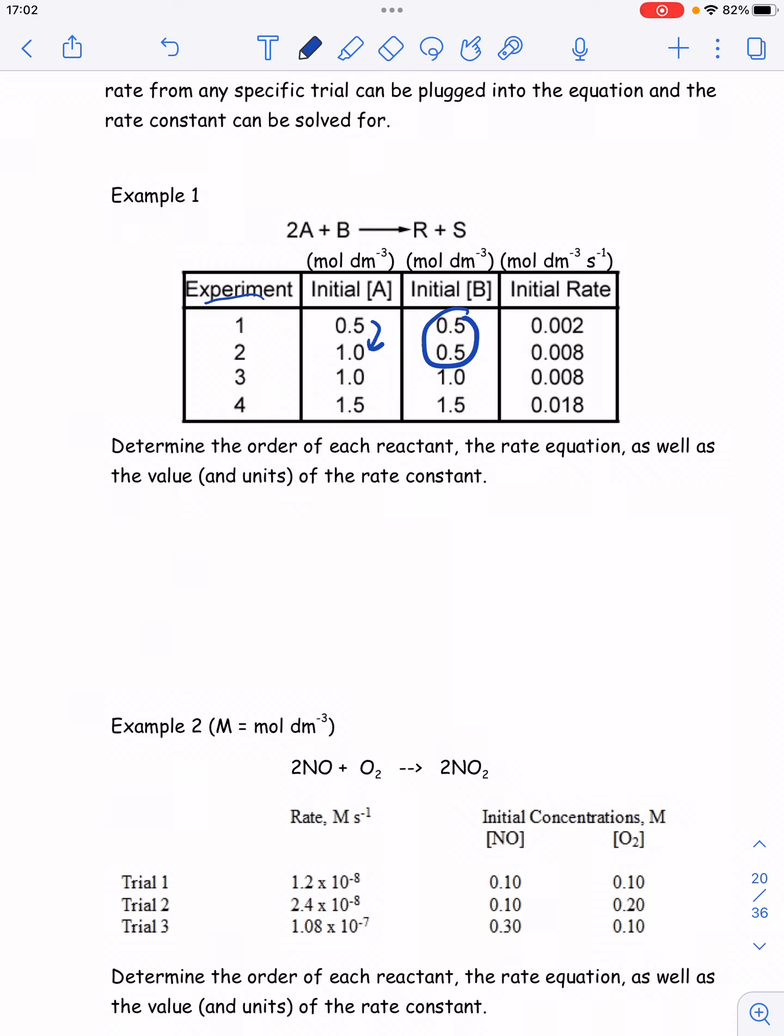So I can see that from experiment one to two, I have doubled the concentration of A, and then I go and look at what happened to the rate. The rate in this case went four times faster. So the change in concentration has had a squared effect on the rate, so two and then squared, which implies that A is second order. So if I draw my rate equation, I should get that A is second order.